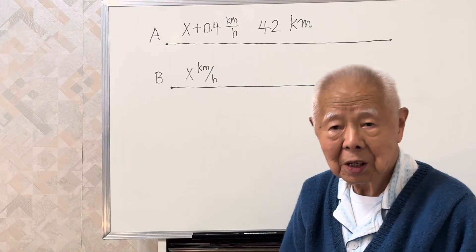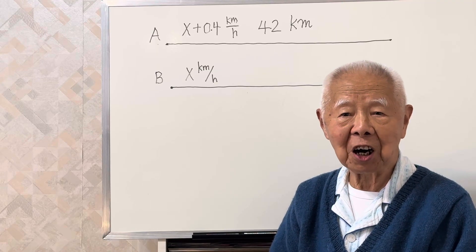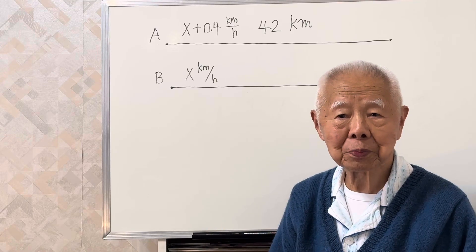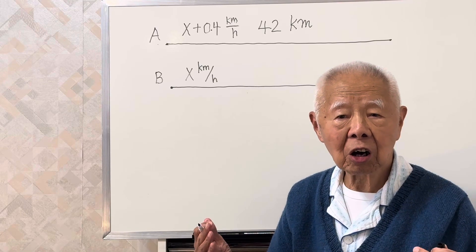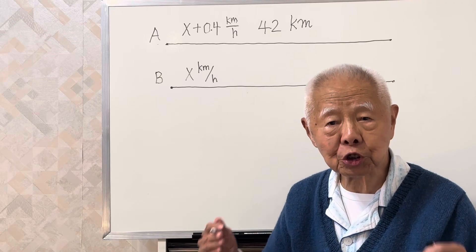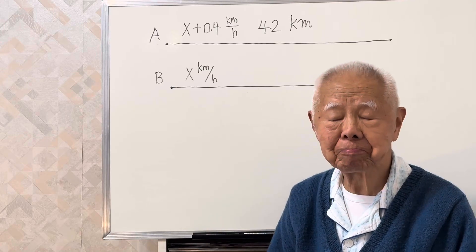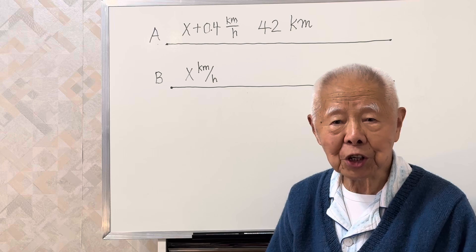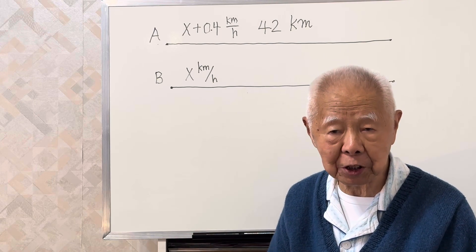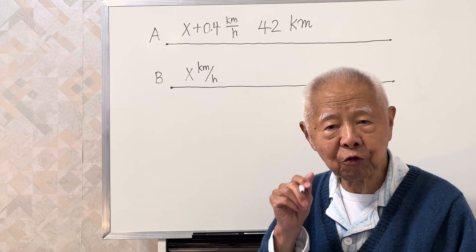A is faster than B. However, A is not lucky, because somewhere between the two cities his car broke down. So A has to stop and do some repair work. This takes him half an hour to repair it.